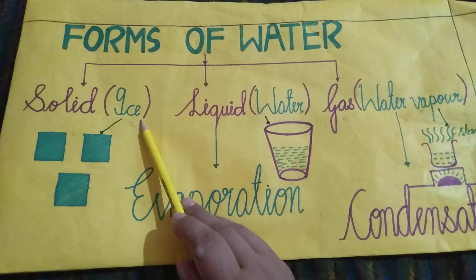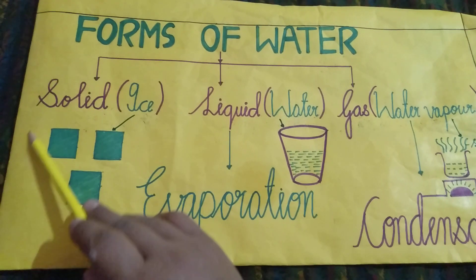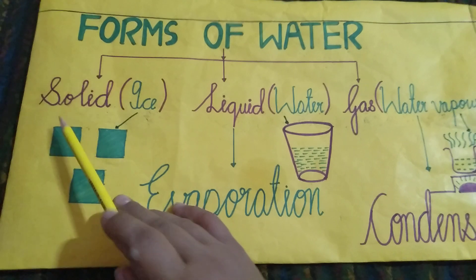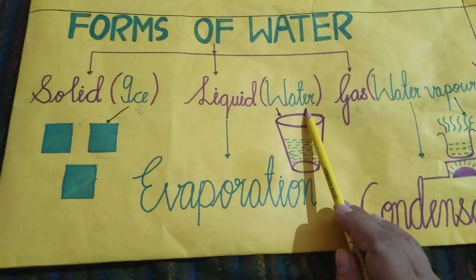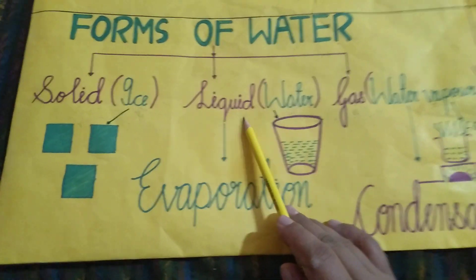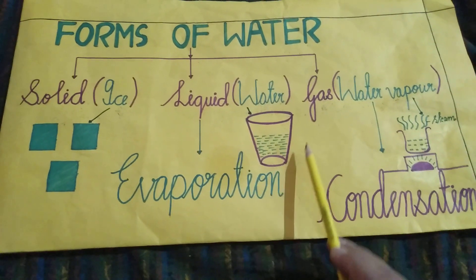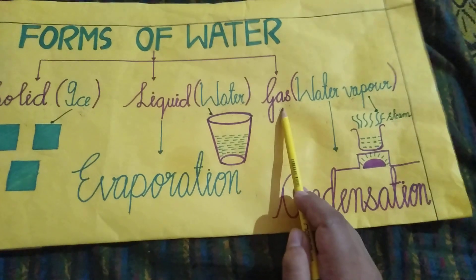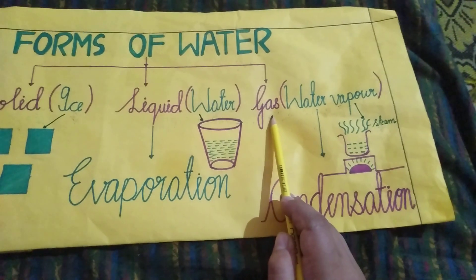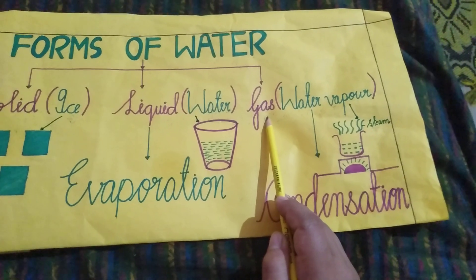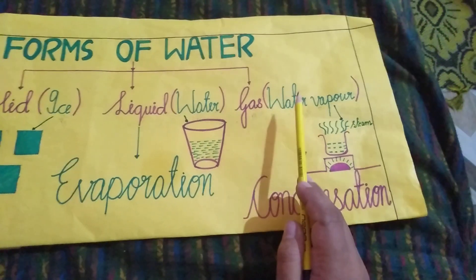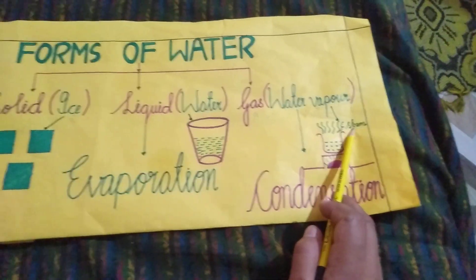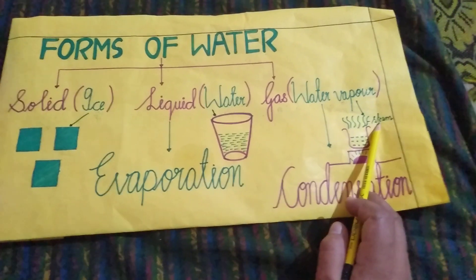Ice — ice means barf. Ice is a solid form of water. Water is a liquid form; the water that we drink is in a liquid form. And third is gas. Water can be found in the form of a gas called water vapor, or steam. So water has three forms.